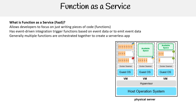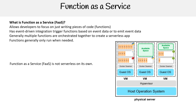Generally, multiple functions are orchestrated together to create a serverless application, sometimes also known as microservices. Functions generally only run when needed. Function as a service is not serverless on its own — FaaS is only serverless if it's fully managed and it scales to zero.